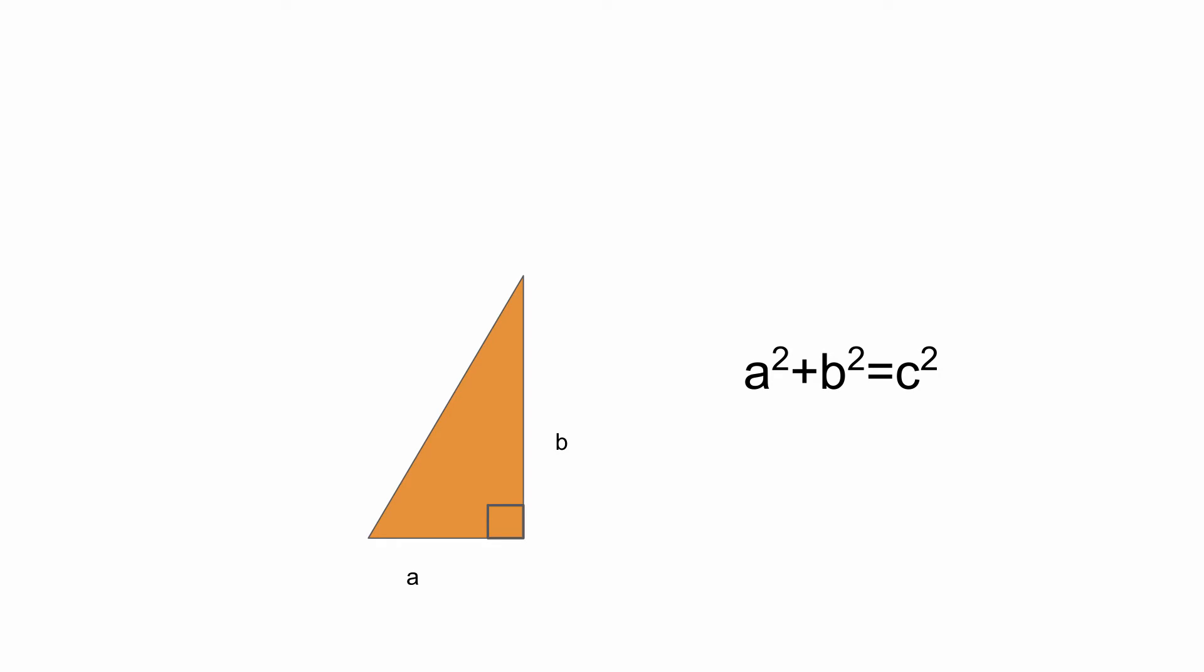As a reminder, the Pythagorean Theorem states that for any right triangle, the sums of the squares of the legs equals the square of the hypotenuse.